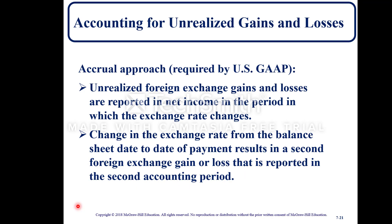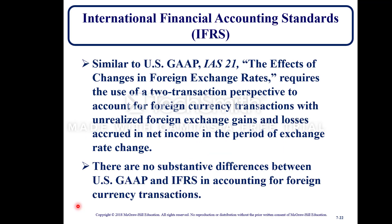Under the accrual approach required by U.S. GAAP, unrealized foreign exchange gains and losses are reported in net income in the period in which the exchange rate changes. A change in the exchange rate from the balance sheet date to the date of payment results in a second foreign exchange gain or loss reported in the second accounting period. Under IFRS, similar to U.S. GAAP, the effects of changes in foreign exchange rates require the two-transaction perspective, and there are no substantive differences between U.S. GAAP and IFRS in accounting for foreign currency transactions.